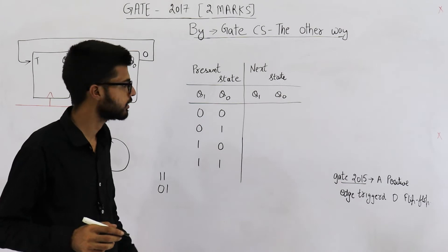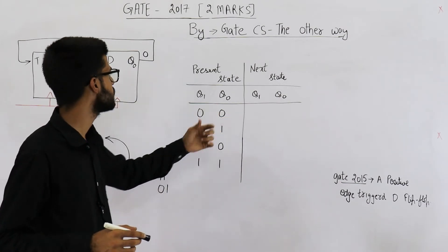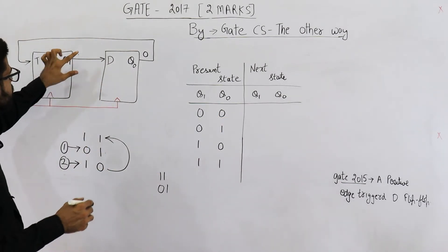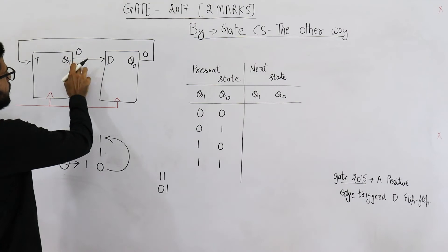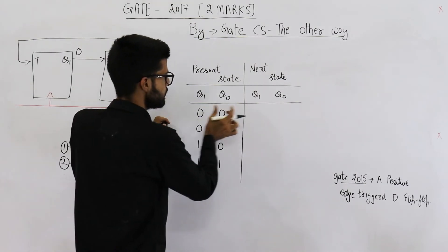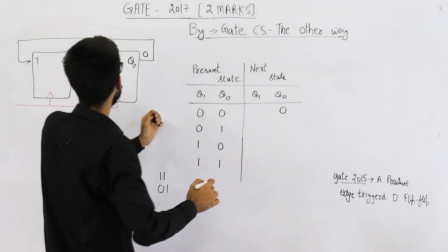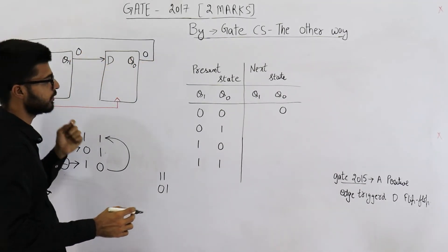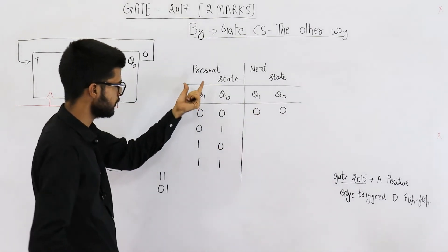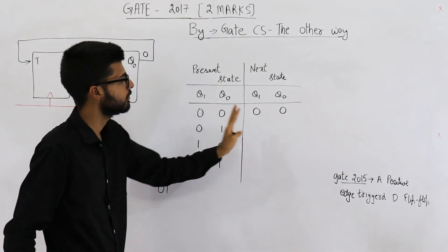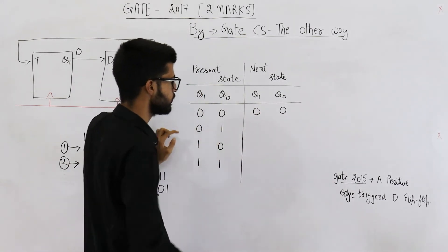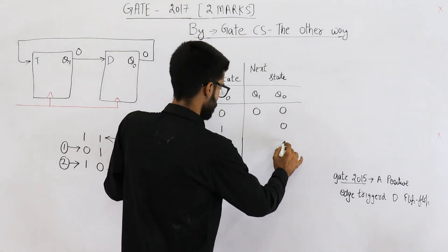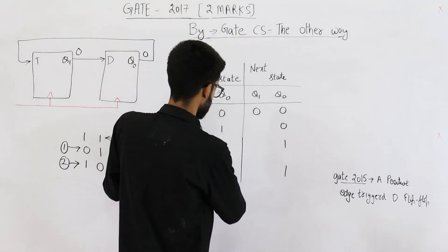Now still, let's fill this table. See, if current state is 00, both of them are 0. This 0 will shift here, that means this 0 will shift here. And this 0 says don't toggle it, so this one will not be toggled. Actually, this entire column of Q0 will shift in Q1. So 0011, 0011.